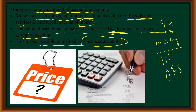For example, rice is measured in terms of kilograms, oil is measured in terms of liters, and cloth is measured in terms of meters. There are various units which we use to measure different items. When the value of those items is expressed in a common unit like money, then it is very easy and convenient for us to maintain accounts. The value of goods and services is expressed in terms of price.